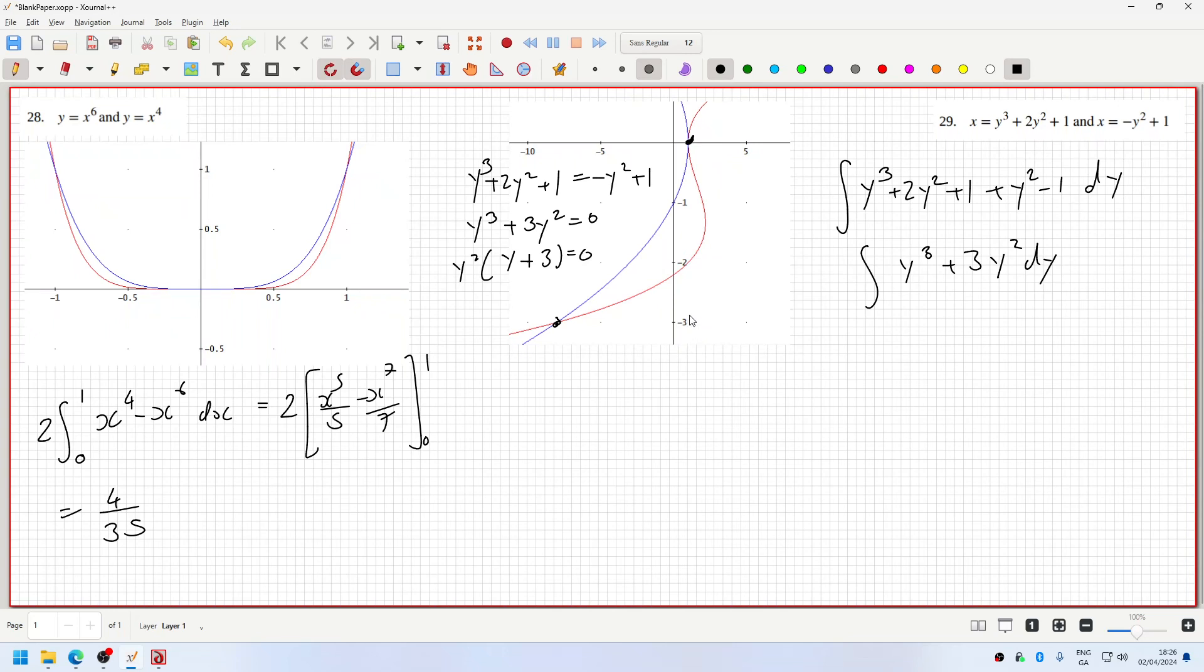Hmm, so that, yeah, that makes sense. That is minus 3. And that is the 0. So, okay, minus 3 to 0.